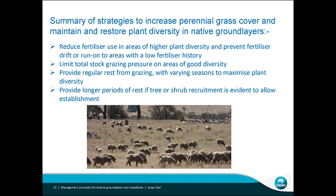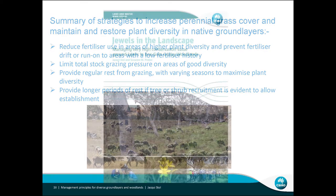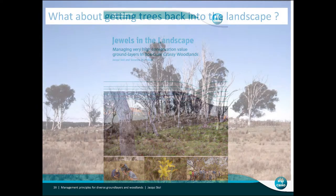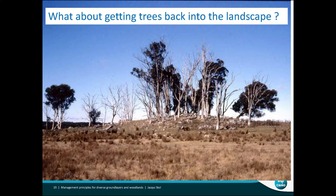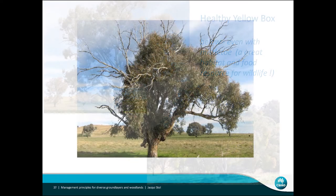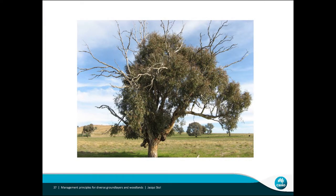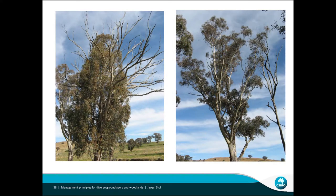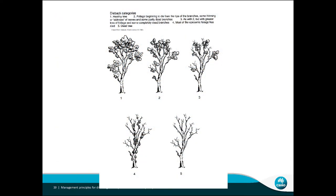You can do revegetation, but it's much easier if you can get some natural regeneration happening. Getting trees back in the landscape — there's beautiful yellow box and Blakely's red gum as part of the system. Even trees with mistletoe are fantastic for wildlife — you can have very healthy trees with a heavy mistletoe load. There's a lot of pressure on a tree out in a paddock, and these are quite common sites in terms of what you might see — various stages of senescence and dieback.